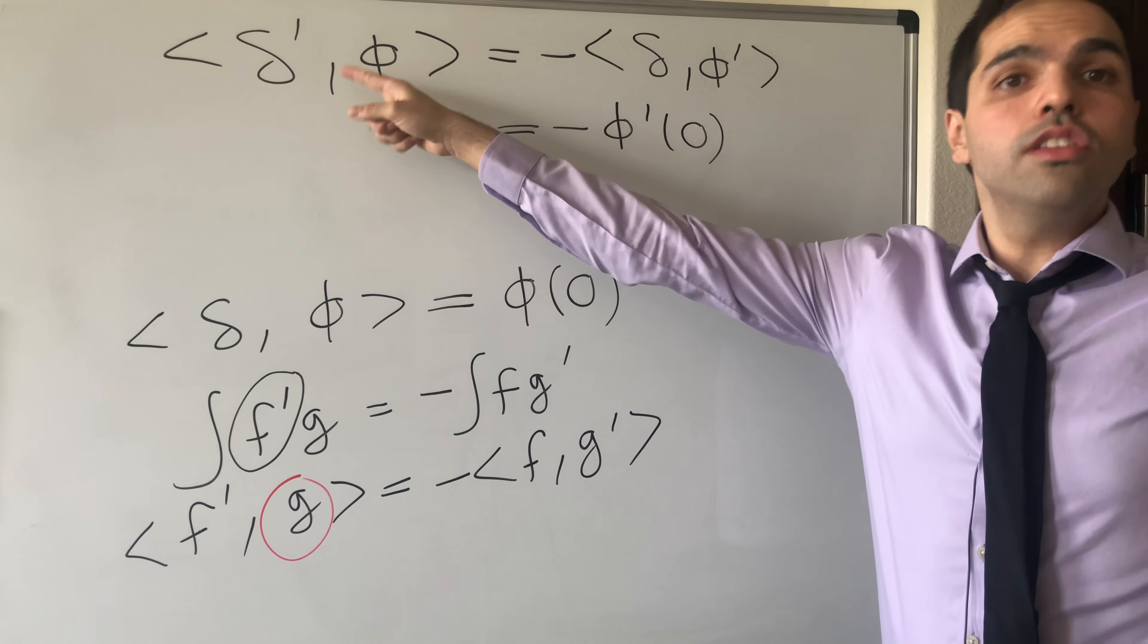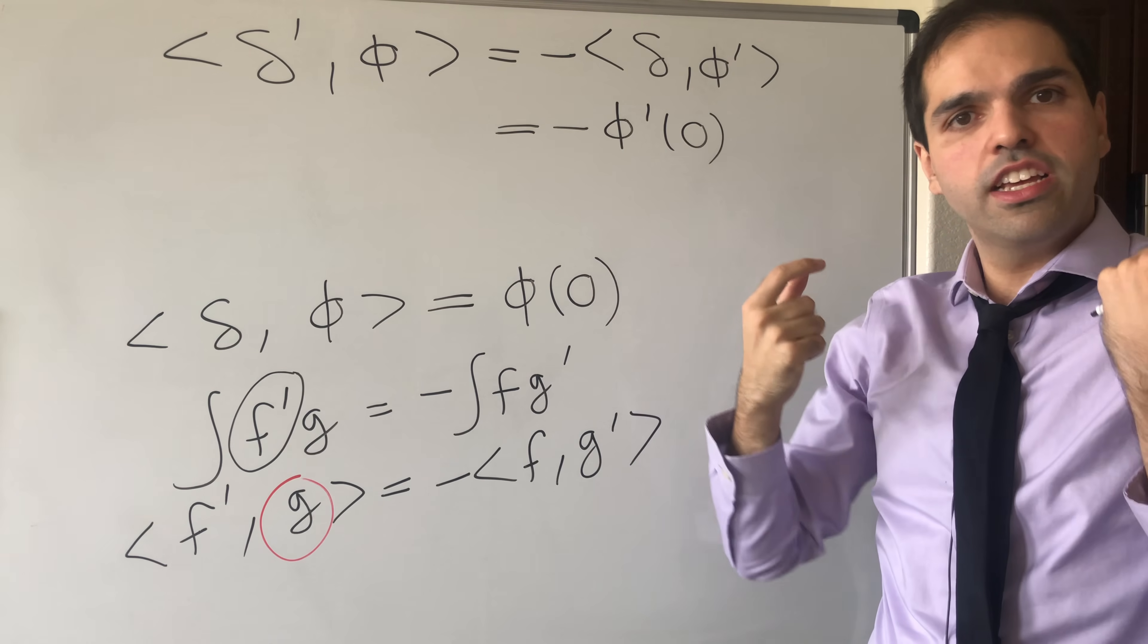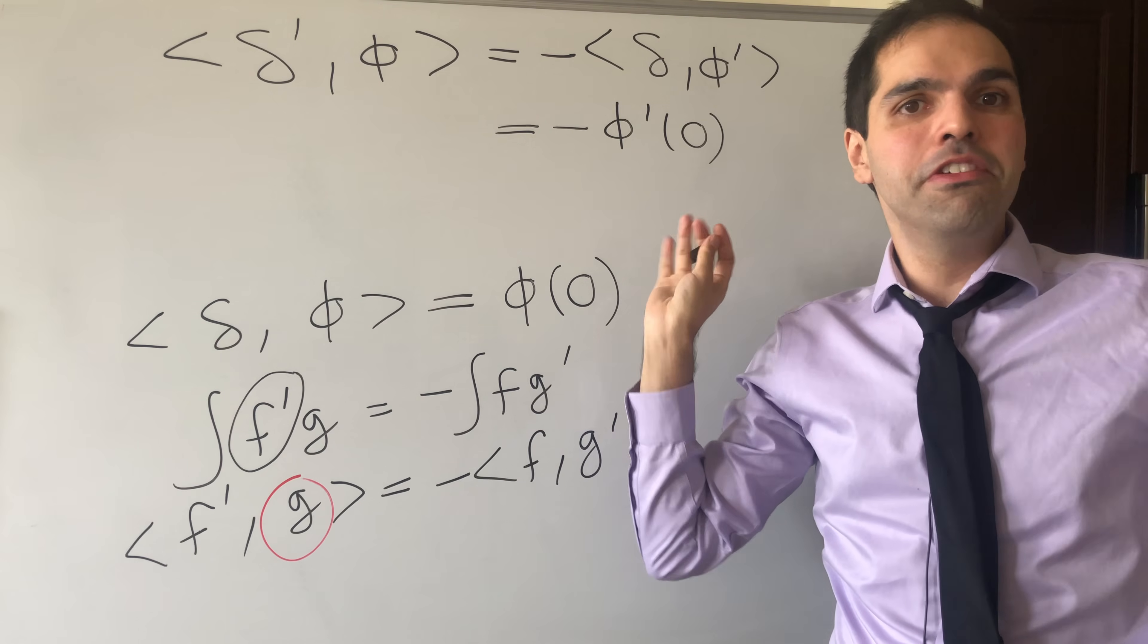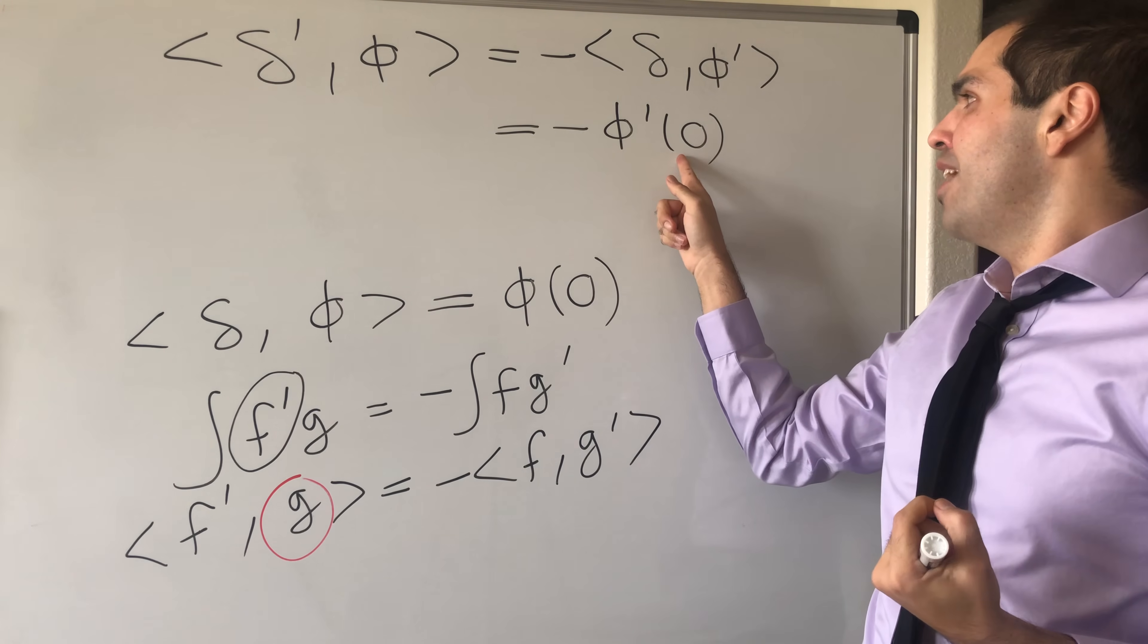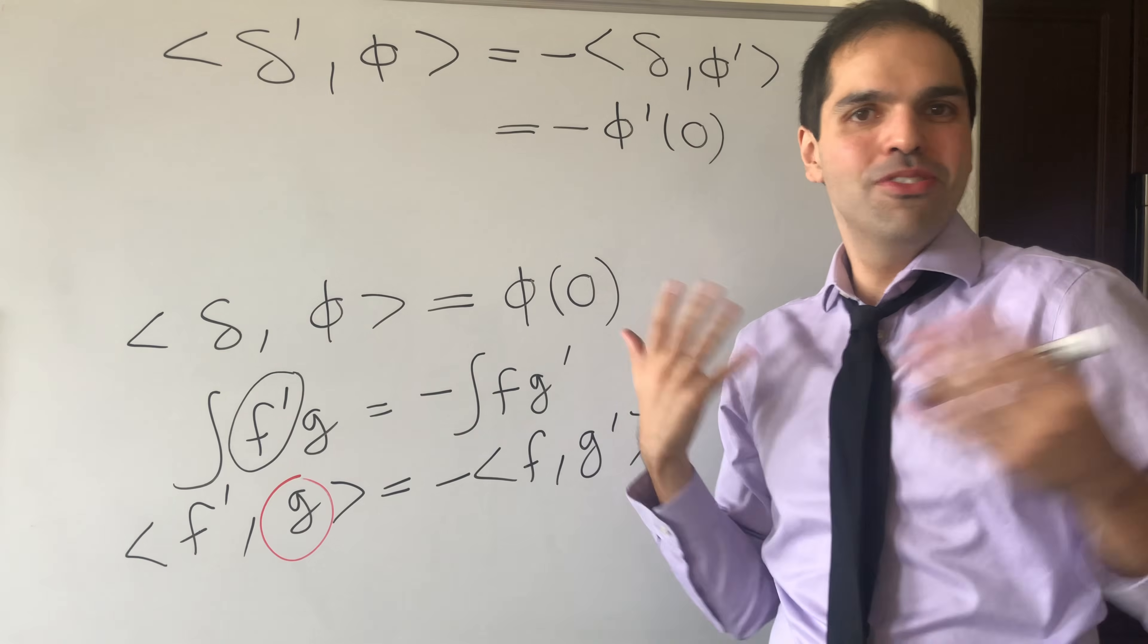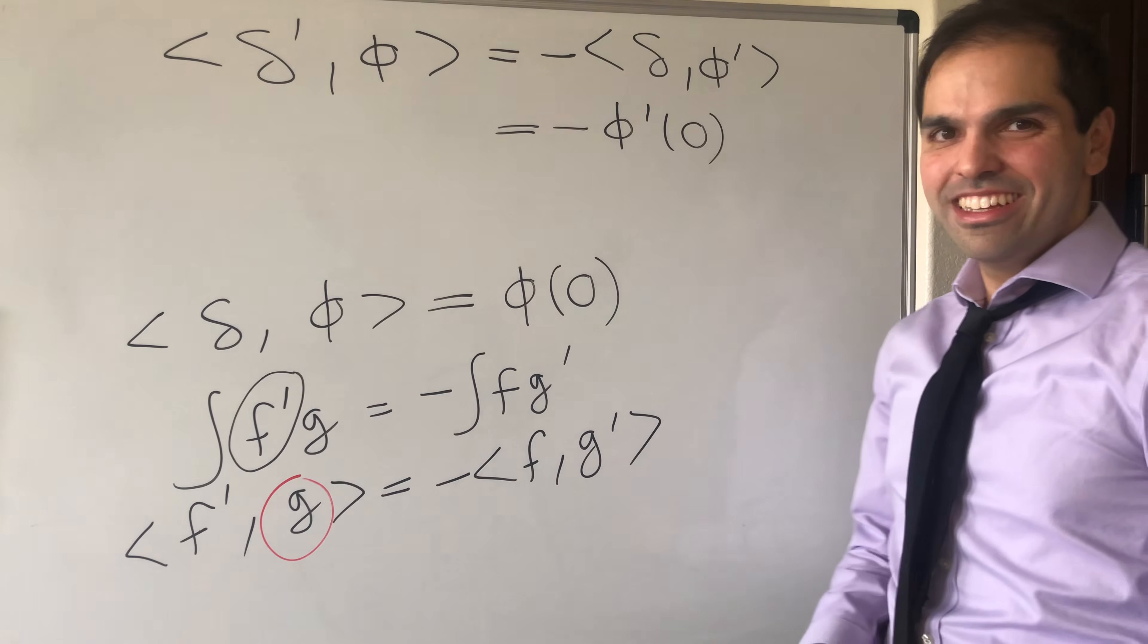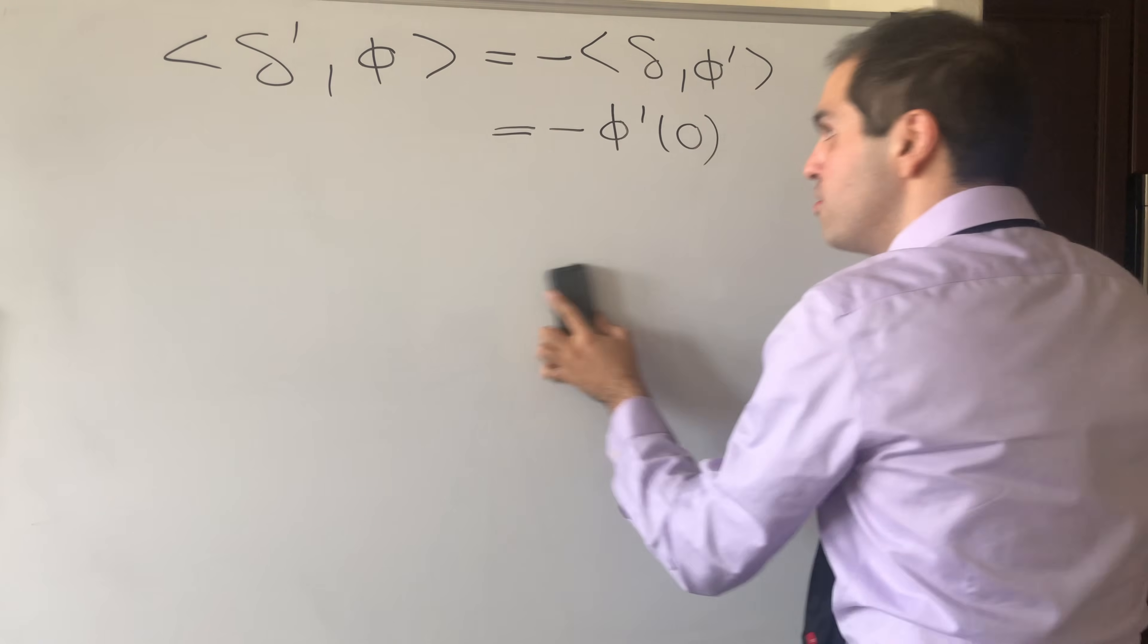So this is the derivative, this is delta prime. It's just the distribution which takes functions as an input and spits out minus the derivative at zero. So it concentrates functions at zero but with this minus derivative. And it would be interesting if there's a physical significance for that, but I do not care.